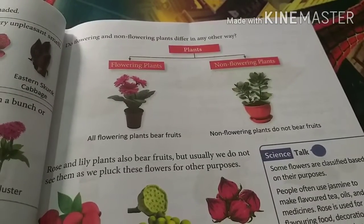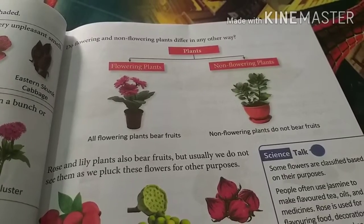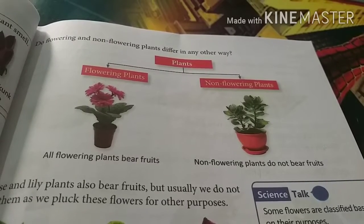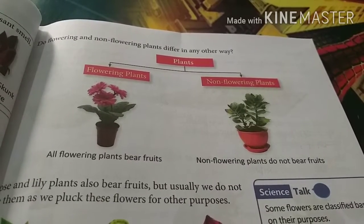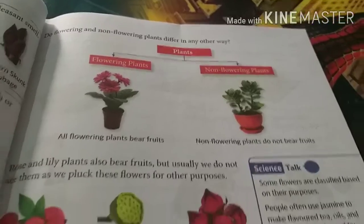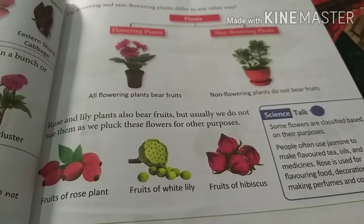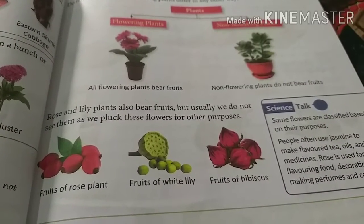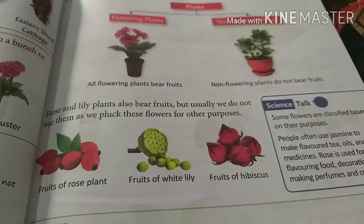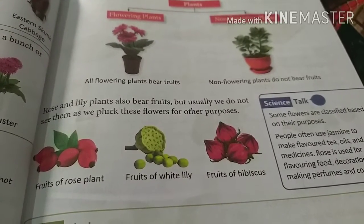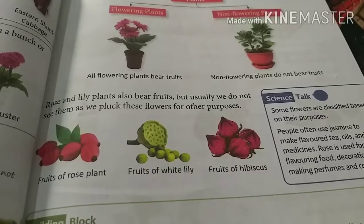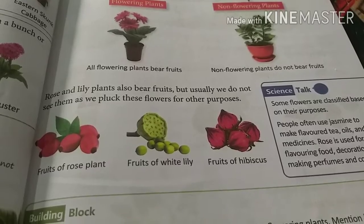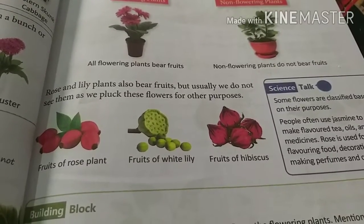Non-flowering plants do not produce flowers and do not produce fruit either. Rose and lily plants also bear fruits, but usually we do not see them because we pluck these flowers for other purposes. Rose and lily also produce fruit, but we never see them because we pluck these flowers.